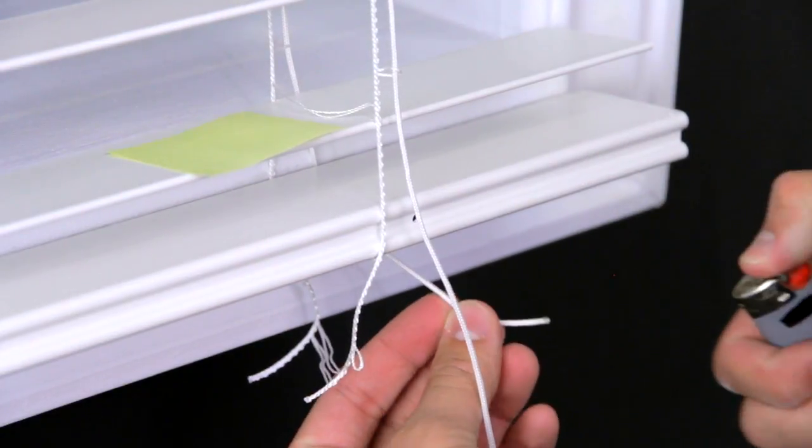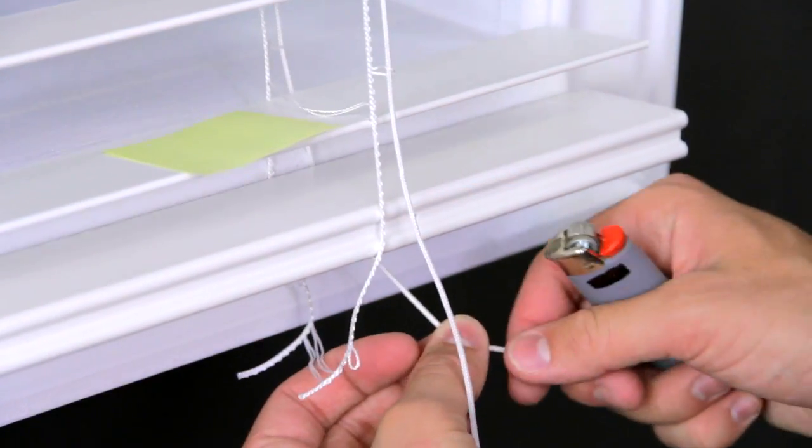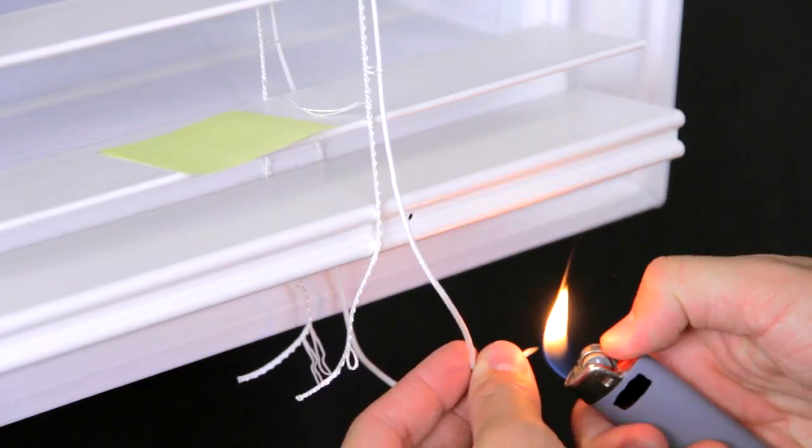Blunt the end of the lift strings with a lighter. Insert the strings into the bottom rail and tie off as shown.